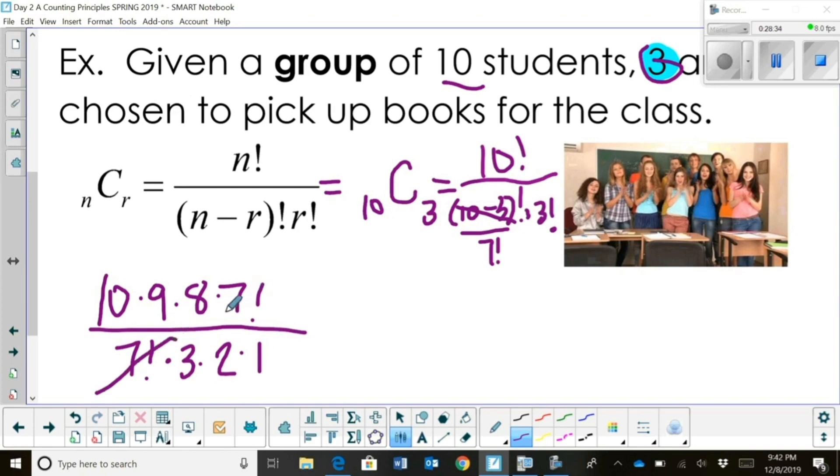Okay, the seven factorials cancel, and then I can reduce three and nine to three, and two and eight I can reduce to four. So, really, I'm just taking twelve times ten, so that's 120.